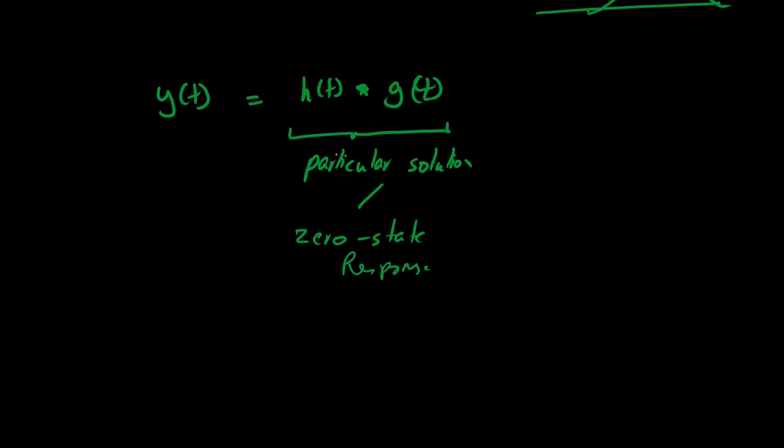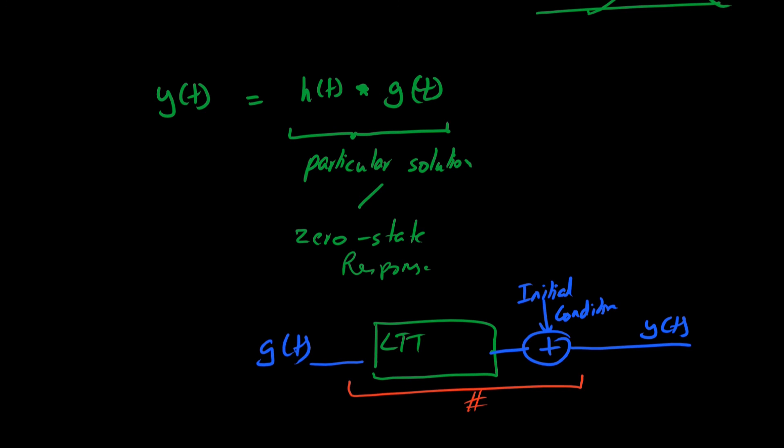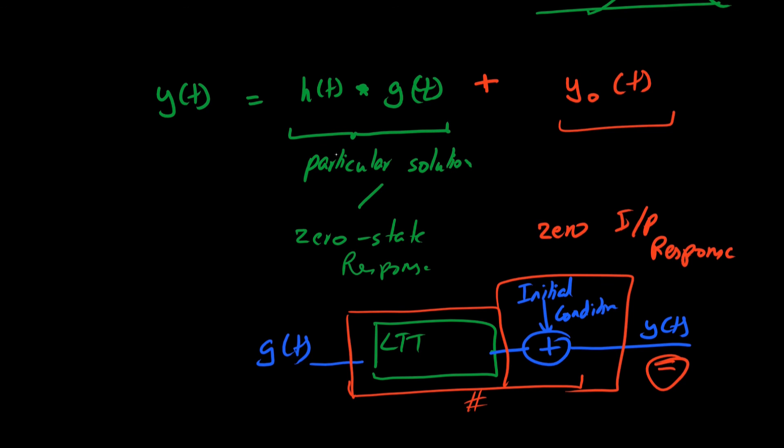But assuming that our system also has some sort of initial conditions. The input is g(t) and the total response as y(t). Now this as a whole is not LTI, but we can break it down into two separate systems. We can find the output response of each system independently. So we can have a plus here and we can have a zero input response, that is a zero, or a transient response.